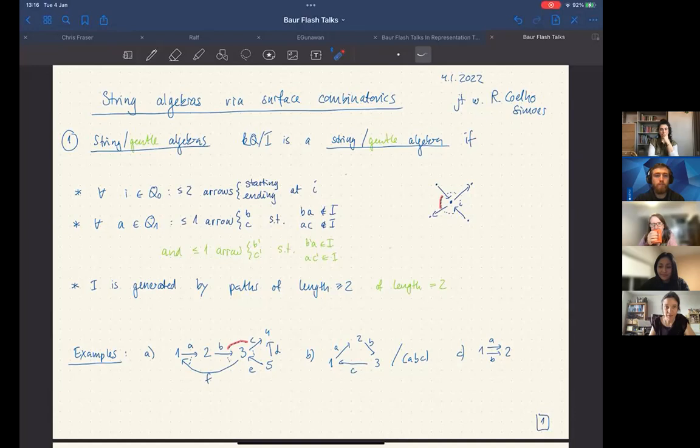That is a string algebra, so that's everything in blue. If at every vertex we have at most two arrows which start and end there.